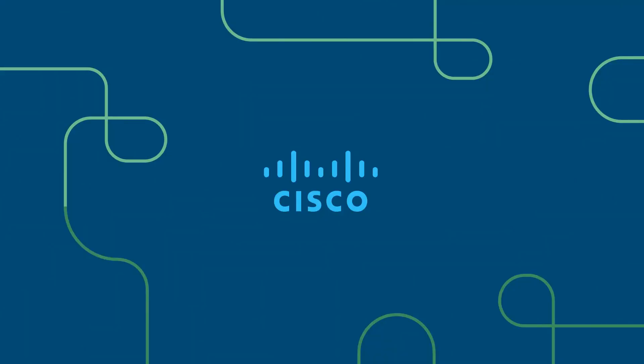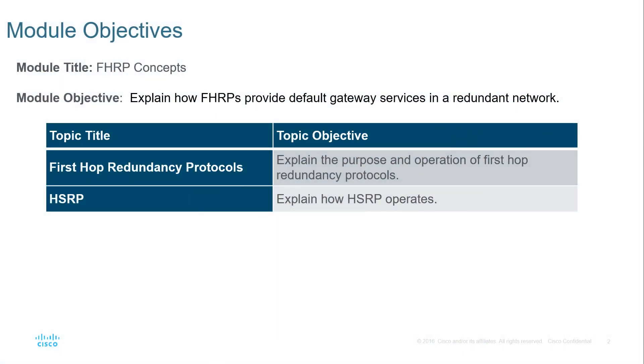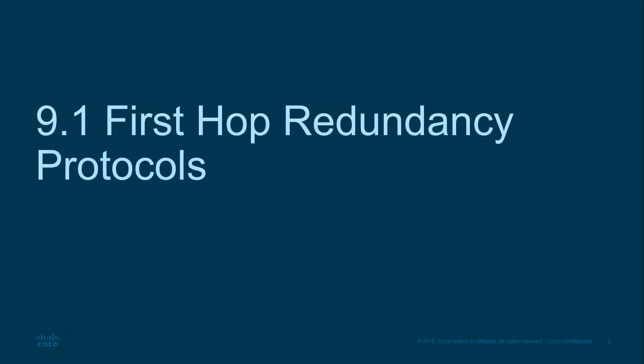Welcome to my Switching, Routing, and Wireless Essentials course. This is the CCNA version 7 curriculum — the second of three courses. We're on Module 9: FHRP, or First Hop Redundancy Protocols. We're going to be covering fault redundancy protocols and looking specifically at HSRP, which is heavily used within the Cisco realm.